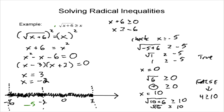Our solution to the inequality is negative 6 less than or equal to x less than or equal to 3. There's our solution — that's how we solve radical inequalities.